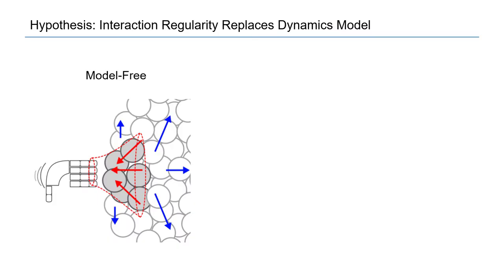So our further analysis, our hypothesis is that actually this interaction regularity replaces the dynamics model, because we can rely on the physics to consistently create the regularity. So we don't need to model it. For complicated shaped objects like popcorn, we will not be able to accurately model it. So here we will compare a model-free approach where we approach the pile without modeling the dynamics of the pile and without considering one single object. We compare a model-free strategy to a model-based strategy.